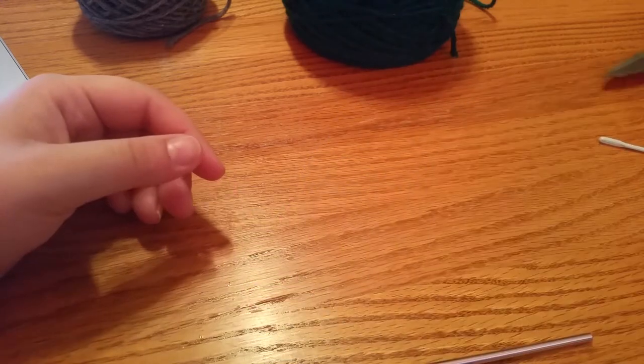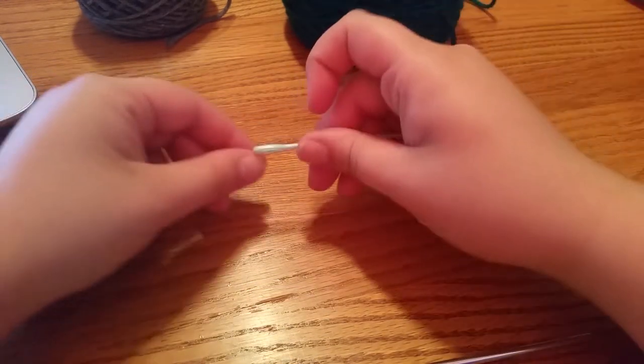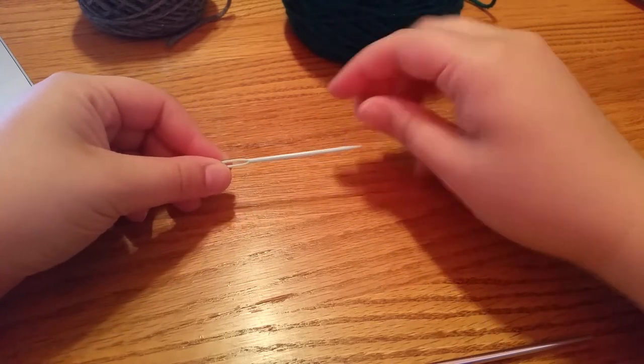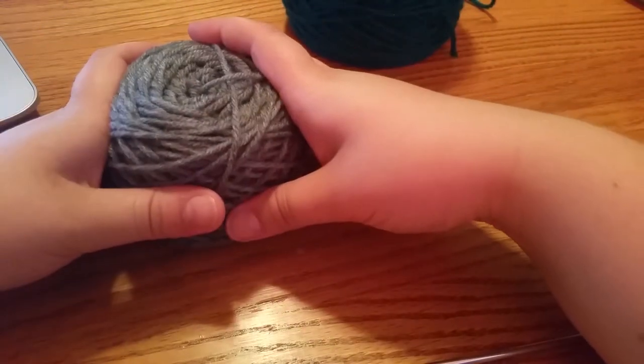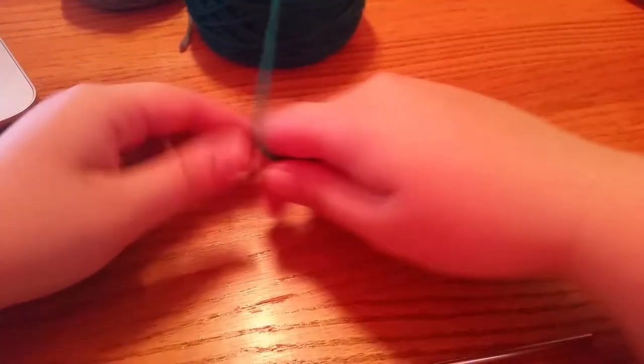So we're gonna need a G-size hook, scissors, a needle, your secondary color and your first color.